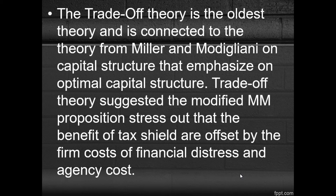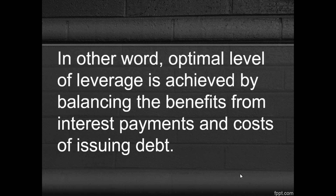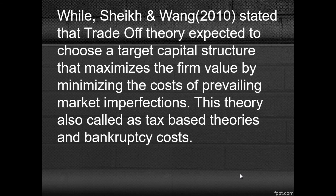Trade-off theory suggests that the modified MM framework states that the benefit of tax shields are offset by financial distress costs and agency costs. In other words, the tax benefit achieved from interest payments is balanced against the cost of its impact.